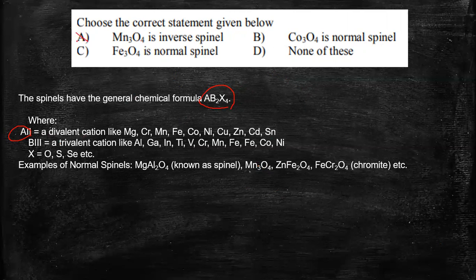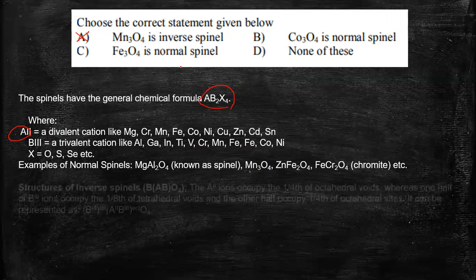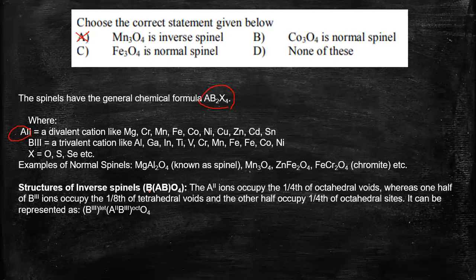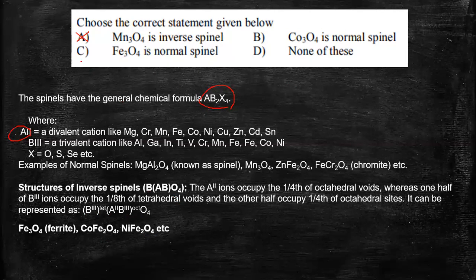Now second is about inverse spinel. So an inverse spinel is like B(AB)O4. So this A+2 would occupy one half of the octahedral voids whereas one half of the B3+ is occupying one-eighth of the tetrahedral and other in the octahedral sites. So therefore, it is like B3+ is in the tetrahedral, A2+ and half of the other set of B3+ is in octahedral void and O4. So the main examples are Fe3O4, CoFe2O4 and NiFe2O4. So this is also not a correct statement because Fe3O4 is an inverse spinel.